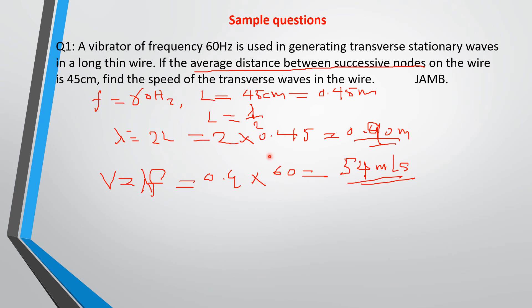This is an exam question and should not take more than one minute to solve. The key is understanding that the distance between successive nodes on a wave equals half a wavelength. The node-to-node distance equals λ/2. Once you understand this, this type of problem becomes easy to solve.